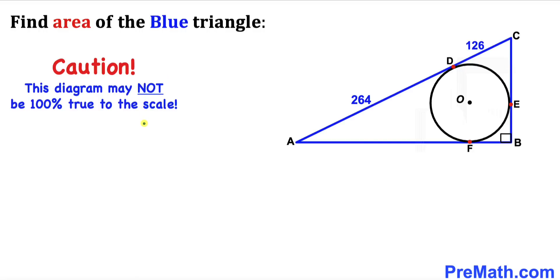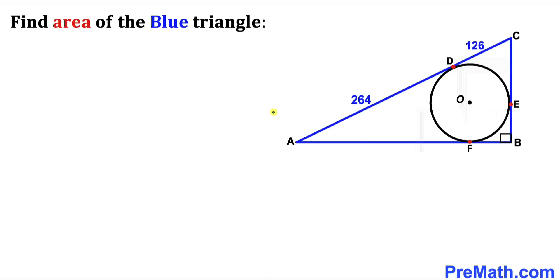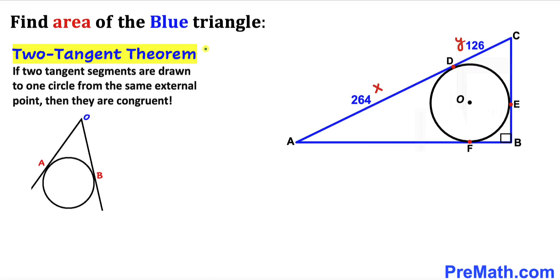Please keep in mind that this figure may not be 100% true to scale. Let's label segment AD as x units and segment CD as y. Now let's recall the two-tangent theorem: if two tangent segments are drawn to one circle from the same external point, then they are congruent.